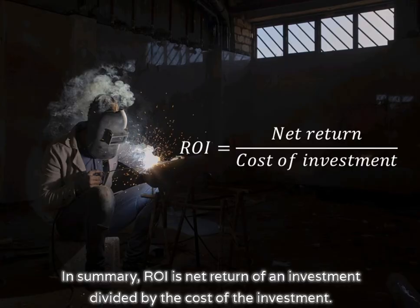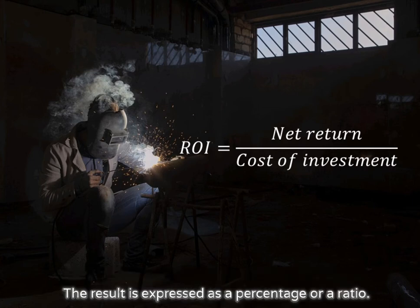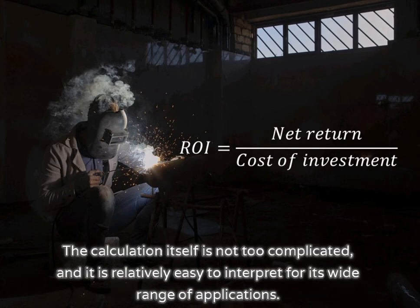In summary, ROI is the net return of an investment divided by the cost of the investment. The result is expressed as a percentage or a ratio. The calculation itself is not too complicated, and it is relatively easy to interpret for its wide range of applications.